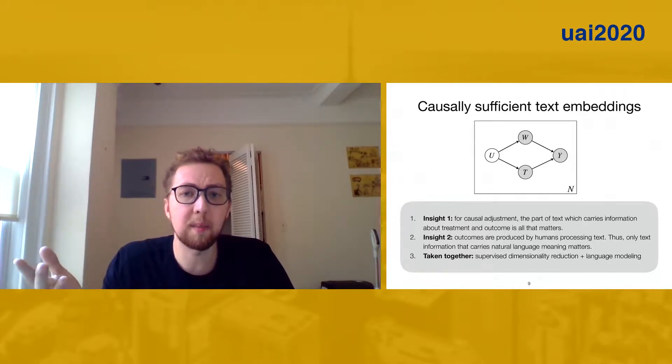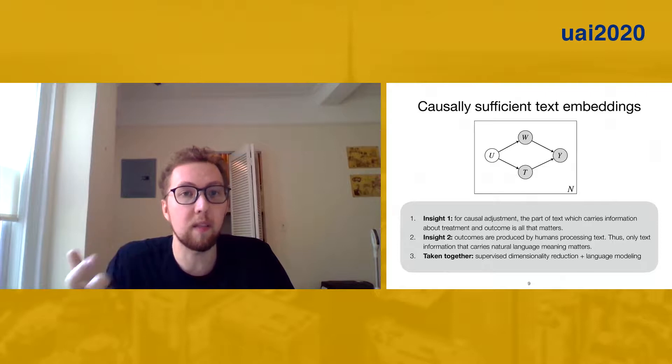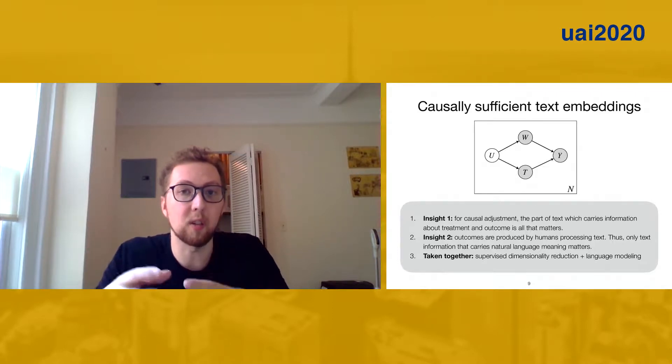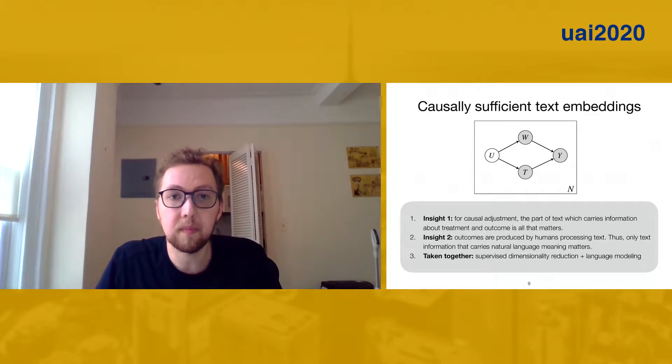Taken together, these two things mean, well, if we can do some kind of dimensionality reduction which is one, supervised so that we retain the ability to predict the treatment and outcome, and two, respects the natural language structure of the text, then we should expect this information to preserve causal identification.